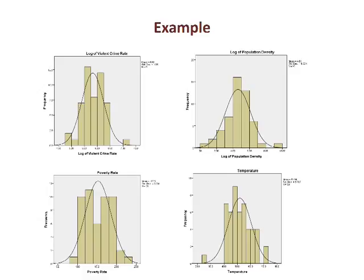The example in this presentation comes from a state-level data set. Four variables are used: the log of the violent crime rate, the log of population density, percent urban, and temperature. Note that two of the variables are logged. Pearson's R works best when the variables are normally distributed, so the variables in this example have been checked for skewness, and the transformed variable is included when appropriate.